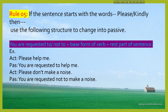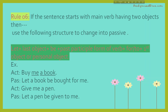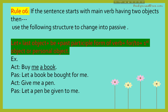Let's see the next rule — Rule 6. If the sentence starts with the main verb having two objects, then you have to use the following structure to change it into passive voice. The structure is: 'Let' plus the last object plus 'be' plus past participle form of verb plus 'for' or 'to' plus the first object or personal object. Let's see the example then it will be more clear.